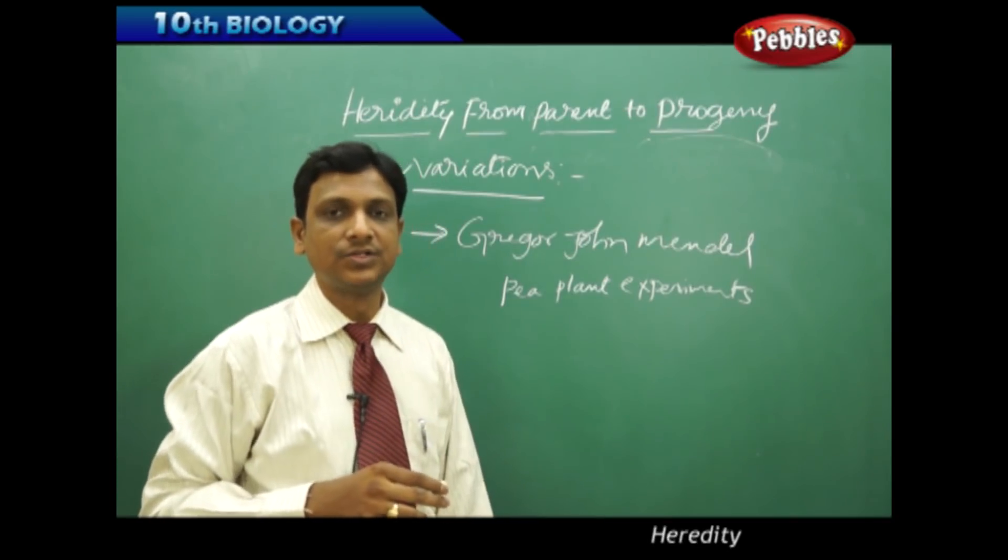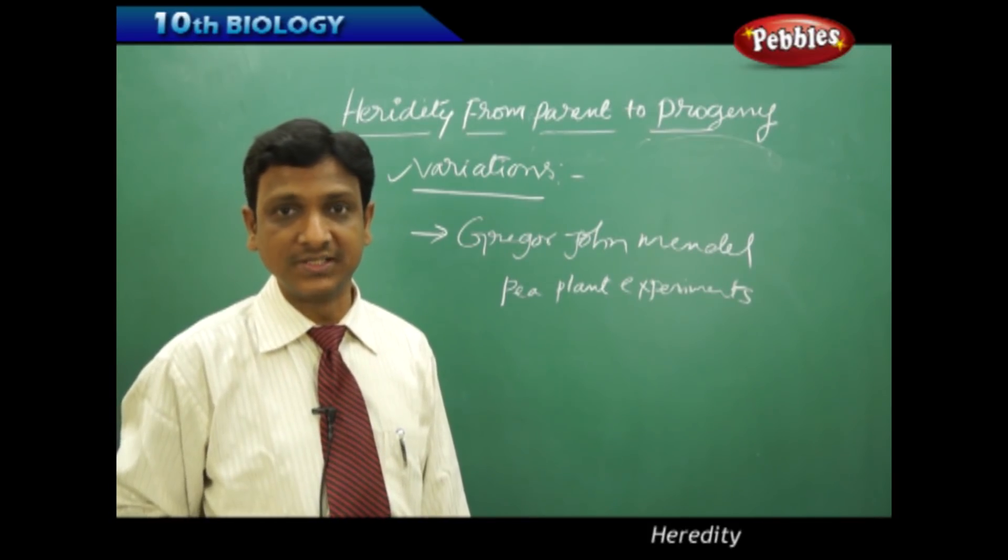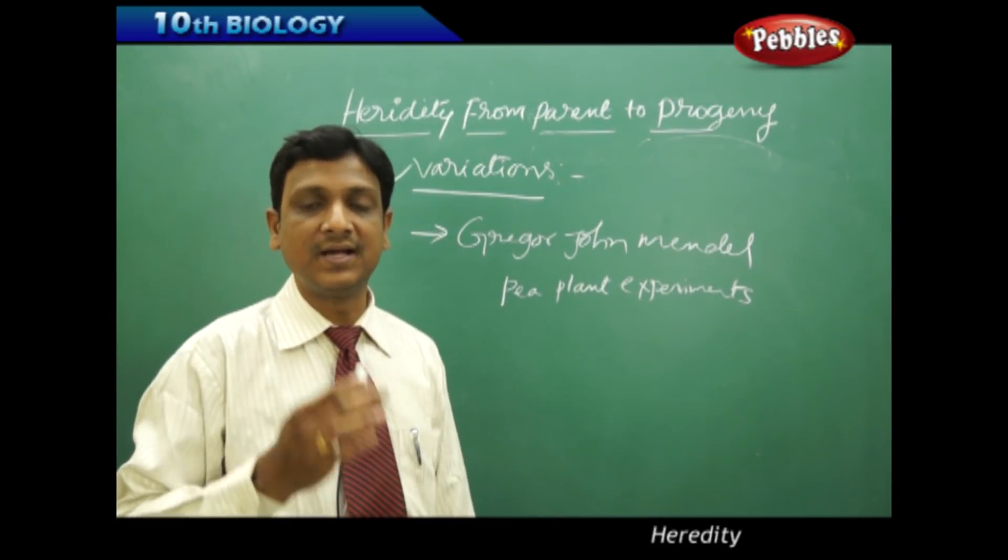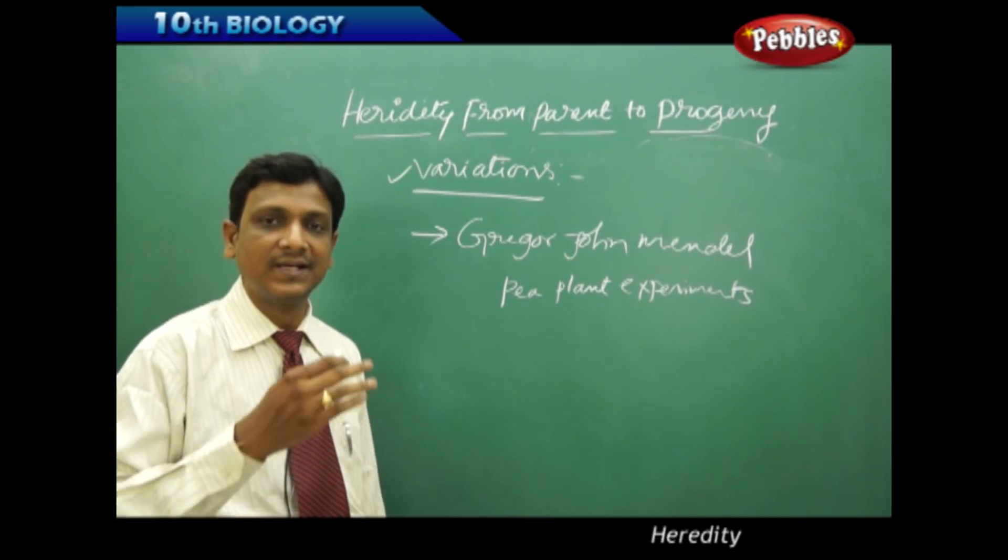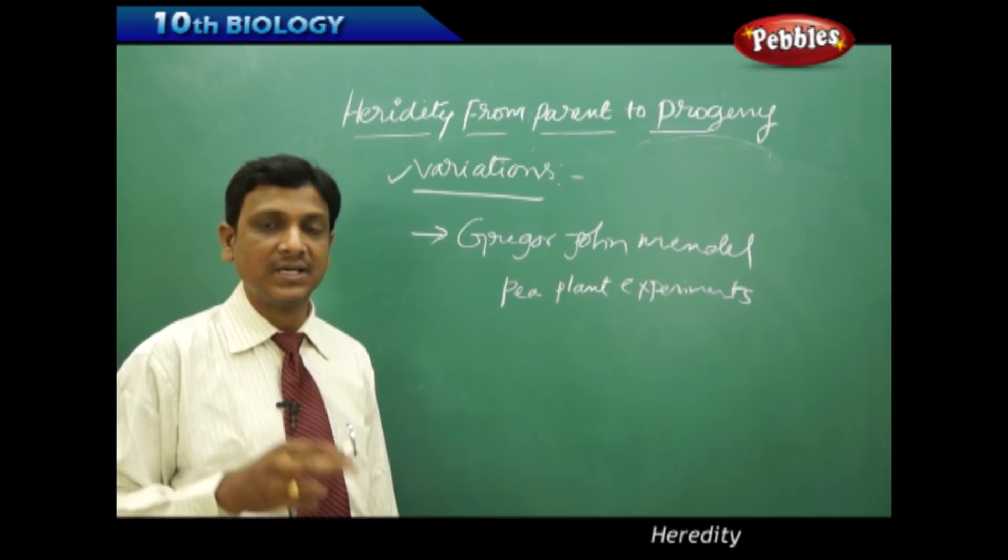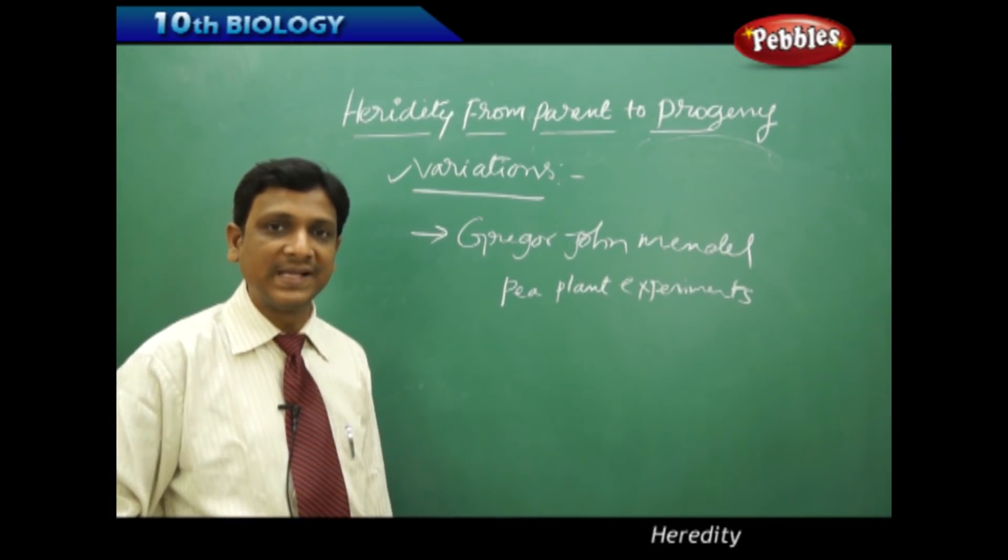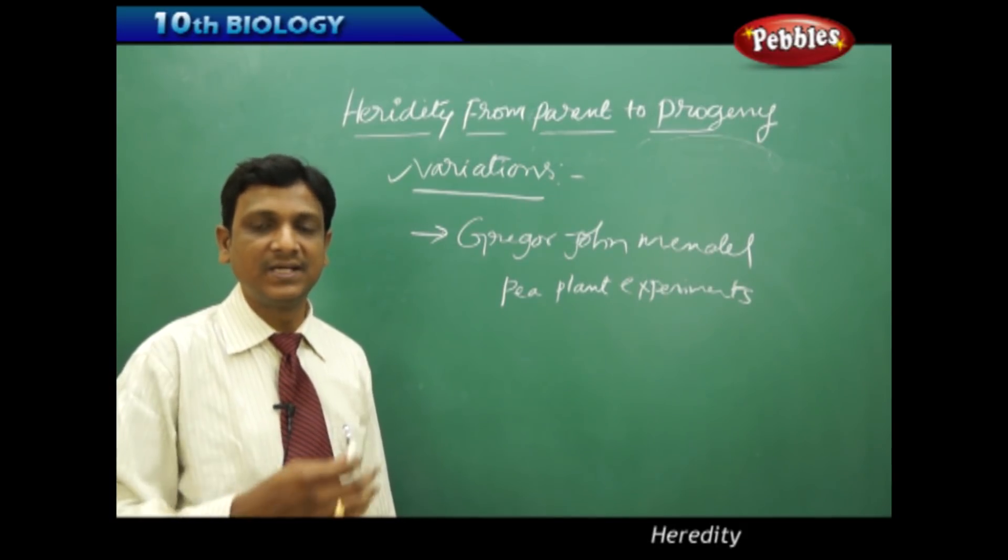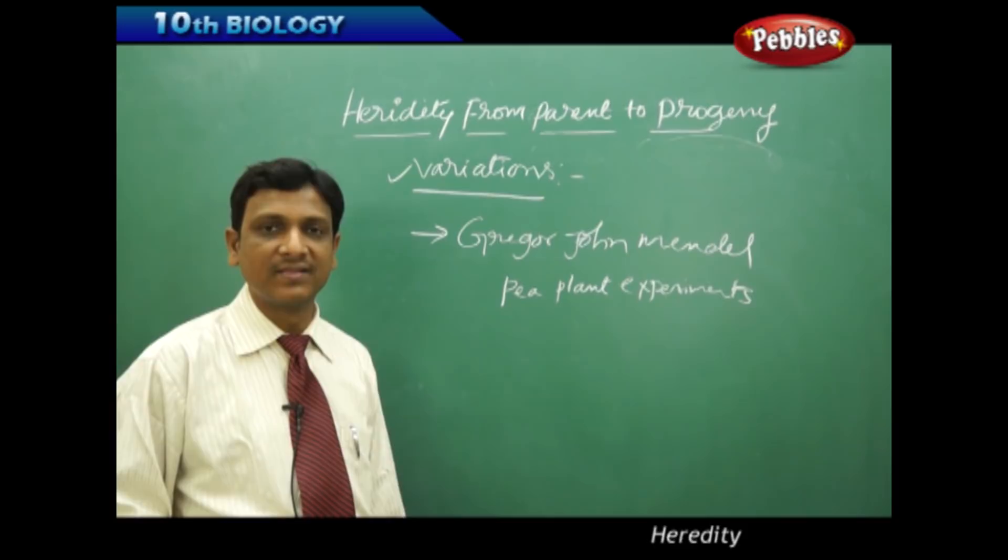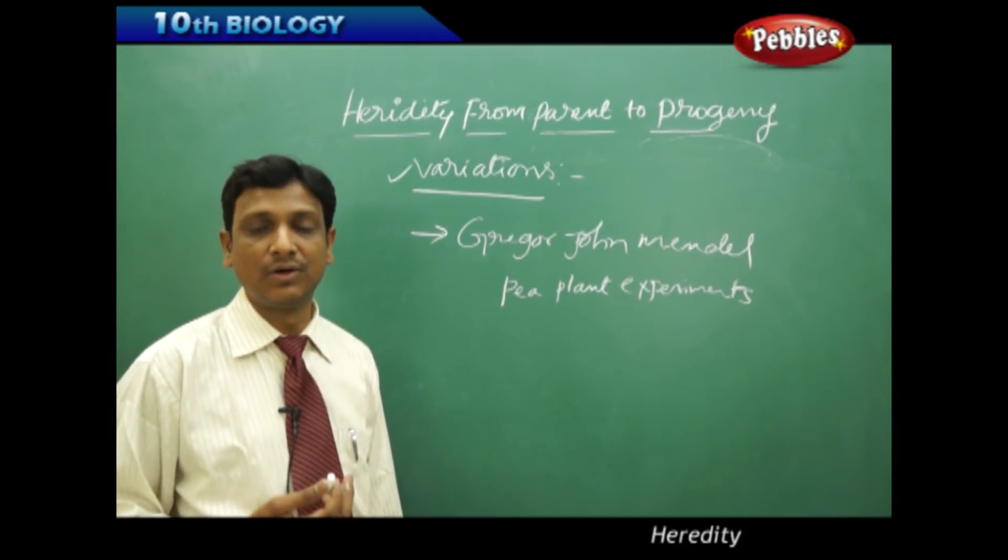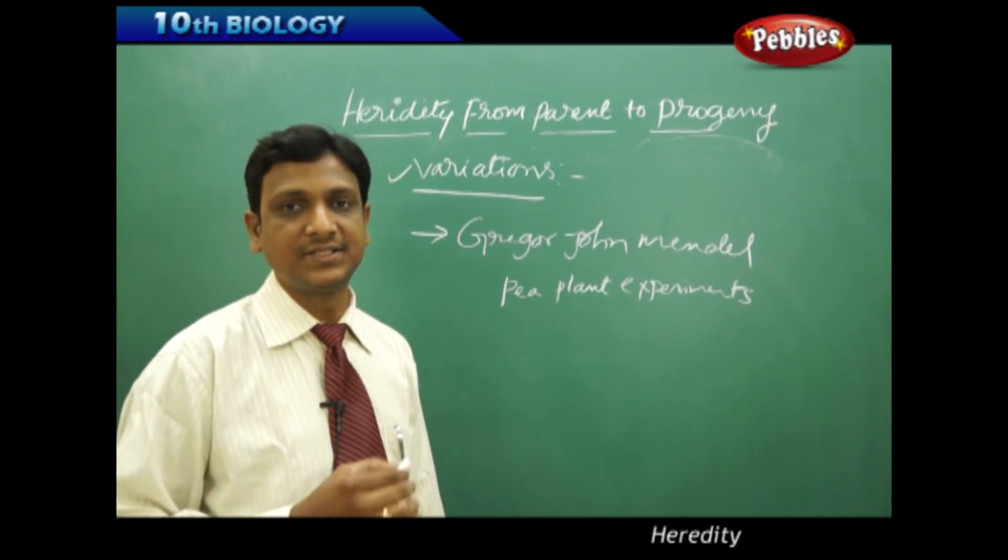He conducted pea plant experiments not in a laboratory, research station, or university - he conducted these experiments in a monastery because he was a monk. In the monastery garden, he conducted these experiments. He chose only the pea plant because it has some contrasting characteristics and the lifespan is very small. By that he can see number of generations in very less time. He can understand how new generations are formed. If he had taken some plant with 10 or 20 years of life, he could not conduct experiments for such a long duration. That is the reason he selected pea plants.